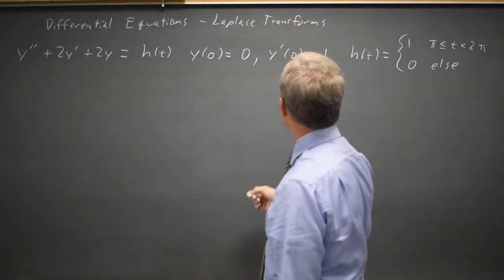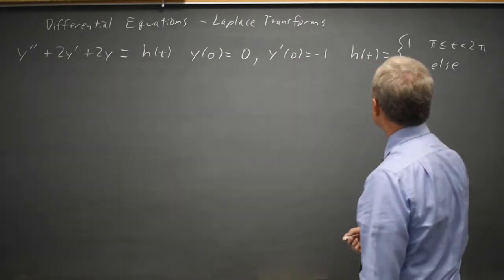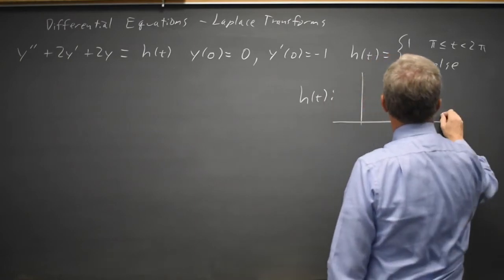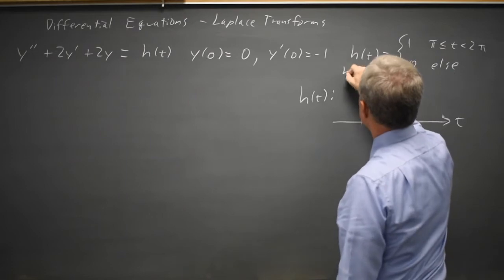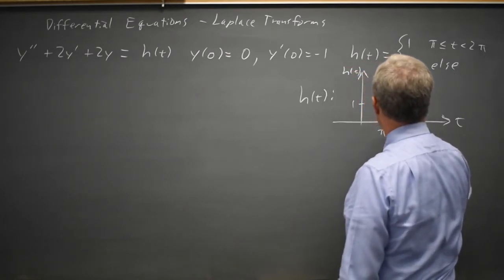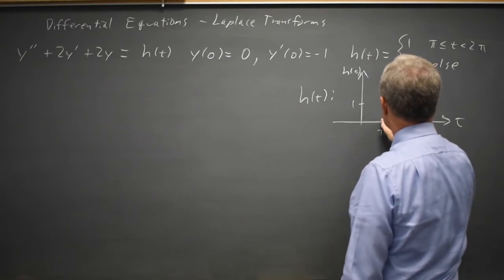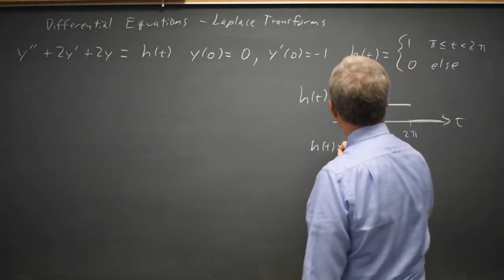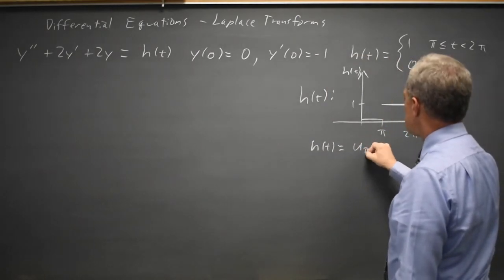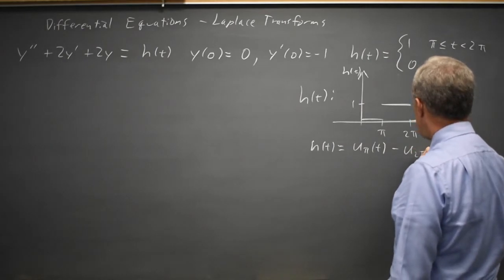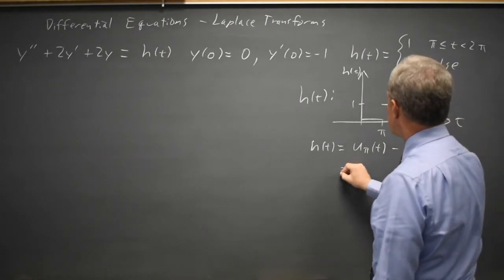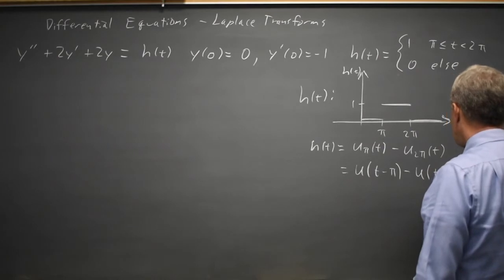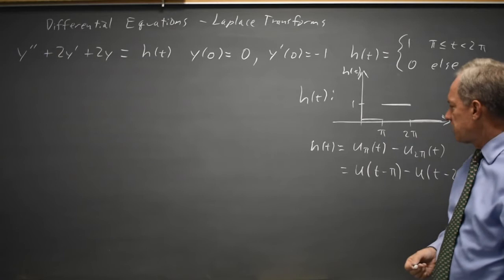I'm going to want to write h(t) in terms of my unit step function — the Heaviside function. If I graph h(t), it looks like: 1 from pi to 2pi. That is u_pi(t) minus u_{2pi}(t), or you might write that as u(t minus pi) minus u(t minus 2pi), depending on what notation you use for the unit step function or the Heaviside function.